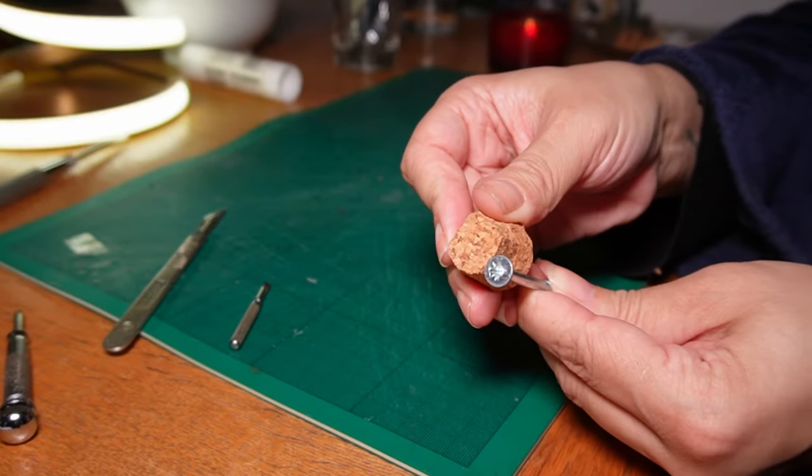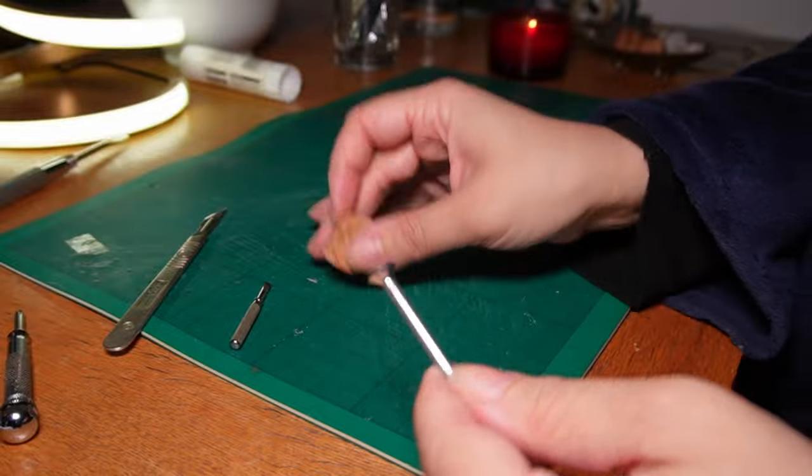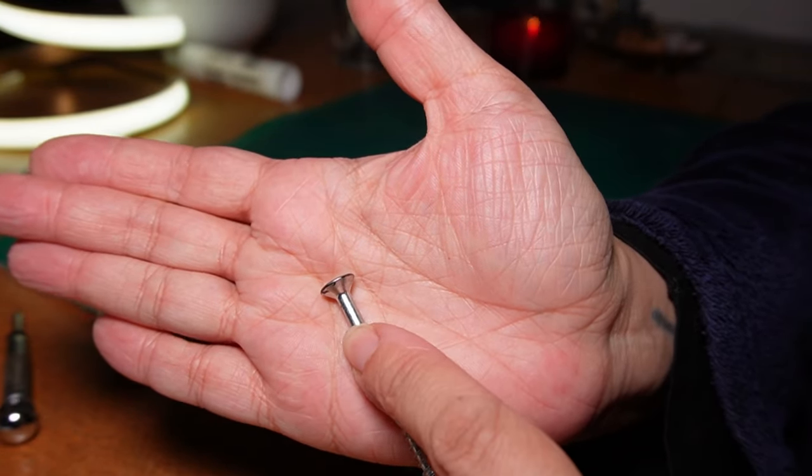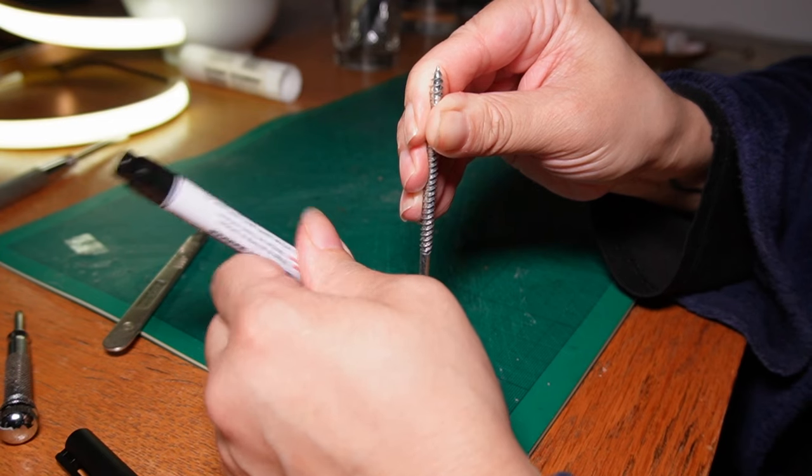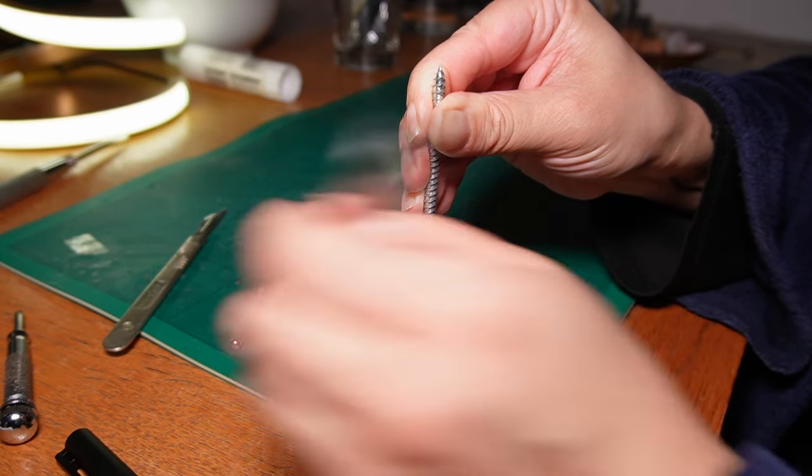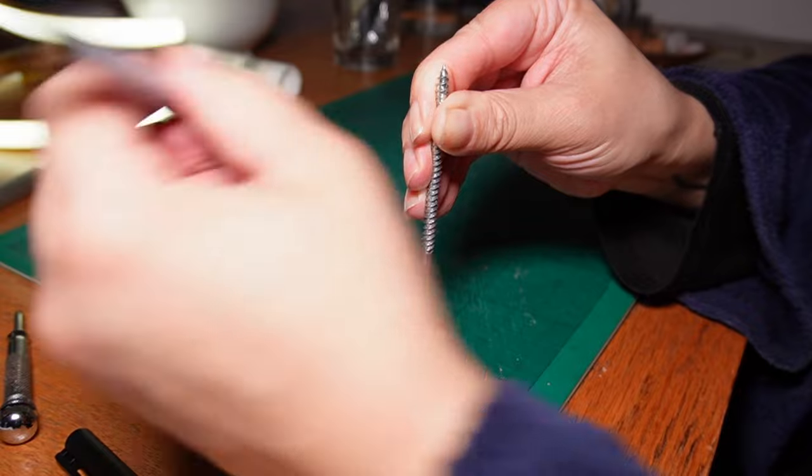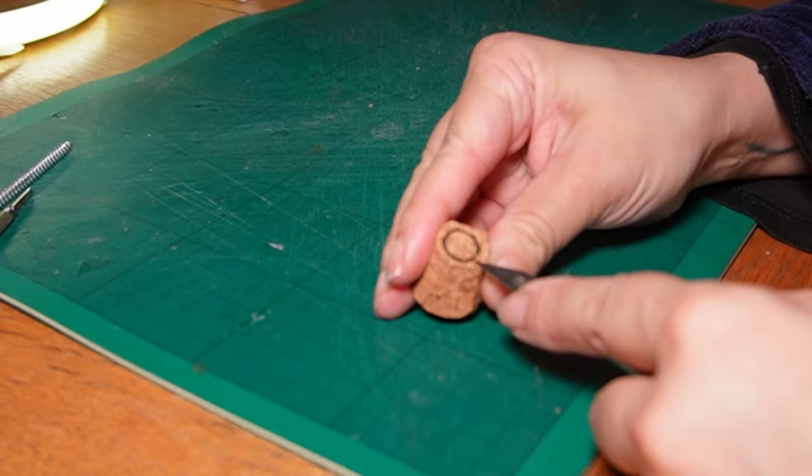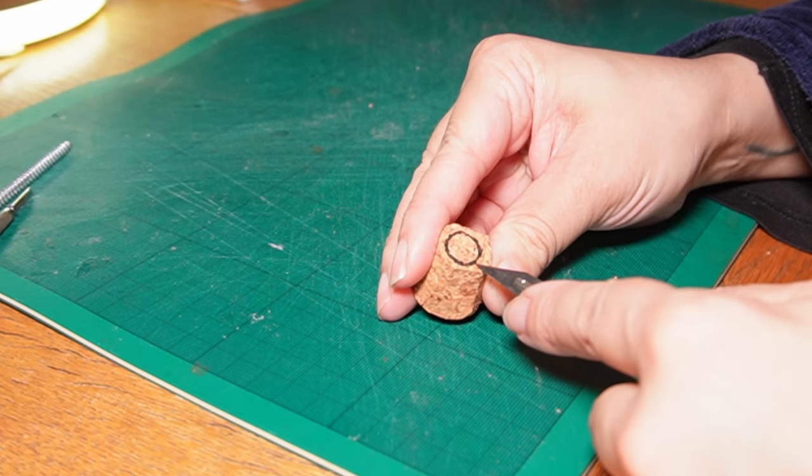The next step is to countersink the screw into the cork. And this helps give a nice, neat, flush finish. The tapered style I have here is perfect for that. I put the screw head onto the cork and drew around it with a sharpie to give me a nice clear outline to cut out the hole, and try and get that in the center. I took the scalpel and chipped away little sections of the cork. Please be really careful when you do this. It's so easy to slip and stick yourself.